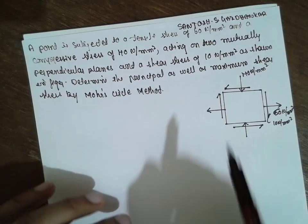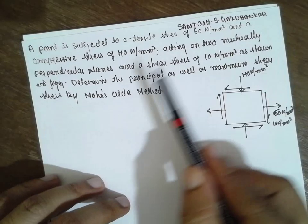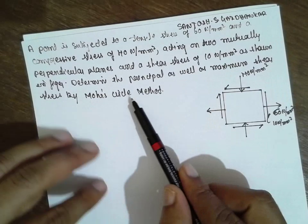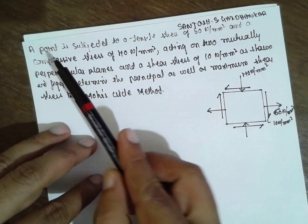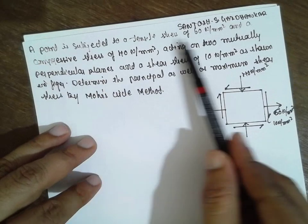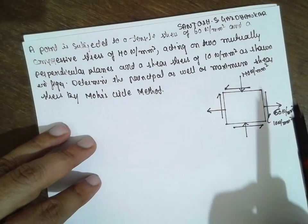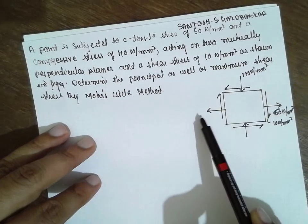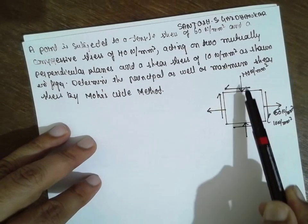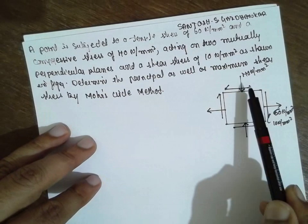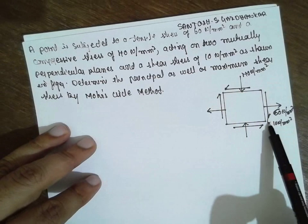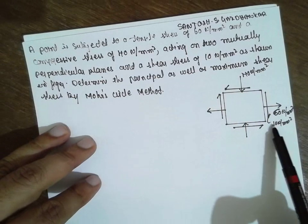Hi, I am Santosh Gaidankar. Today's concept is about the Mohr's Circle. This is the problem they have given. This is the tensile stress they have mentioned. This is the compressive stress. This is the shear stress.